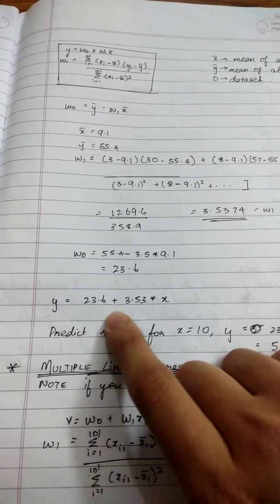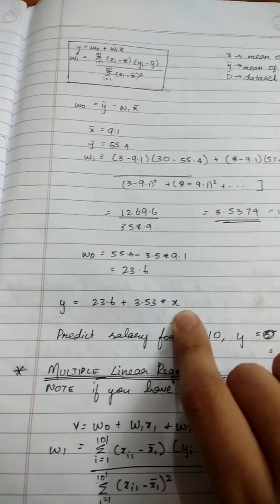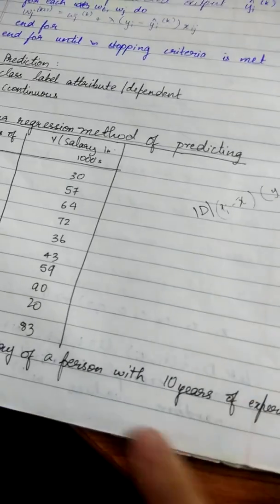which is 23.6 plus W₁ which is 3.53 times X. From the problem, we know X is 10 years, so you substitute 10 and get Y equals 58.6.